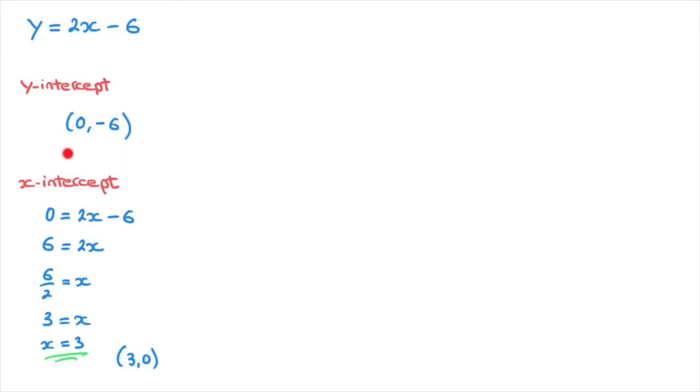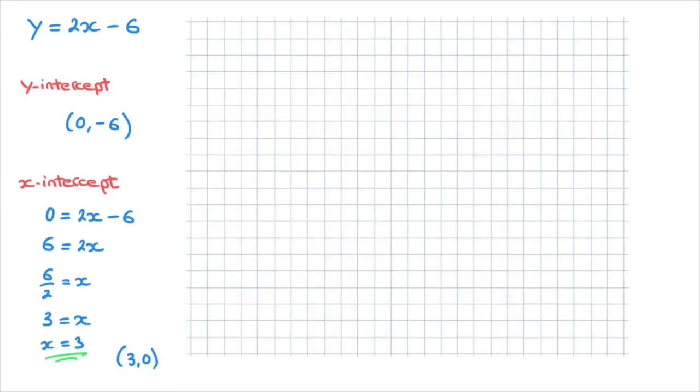Now that we have both the y-intercept and the x-intercept, we can go ahead and draw the line. Let me just throw in some graph paper here. Okay, I've got my graph paper, and I'll quickly draw an xy grid.